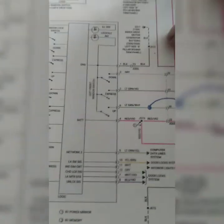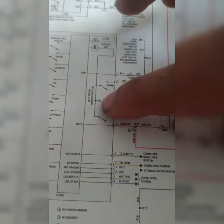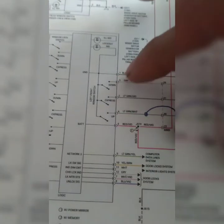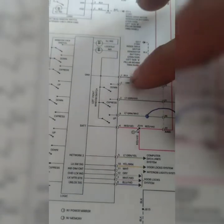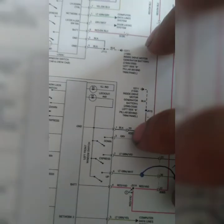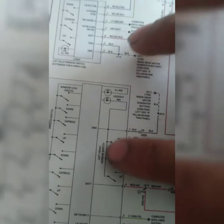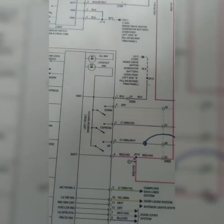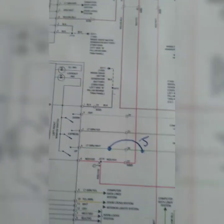Right here you can see you got your black coming in which is ground. You go down in there, you got ground. So this is where I made my jumper right here to complete the circuit for the data line.